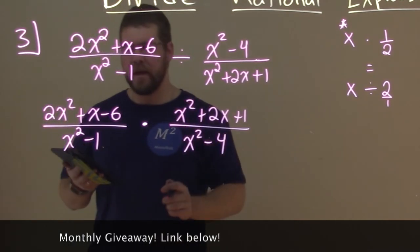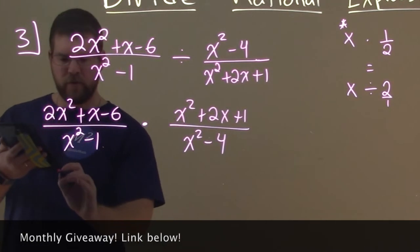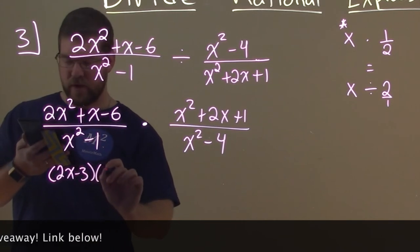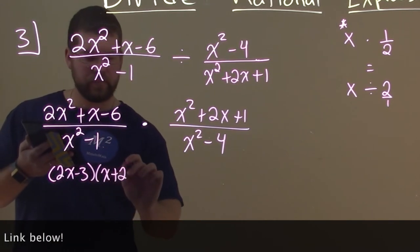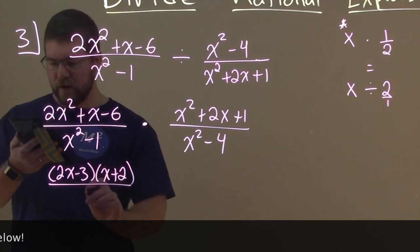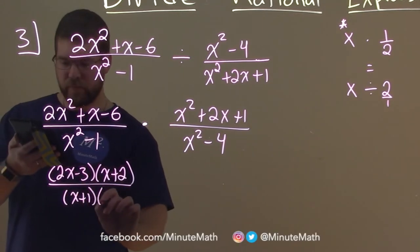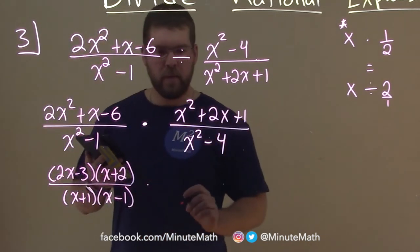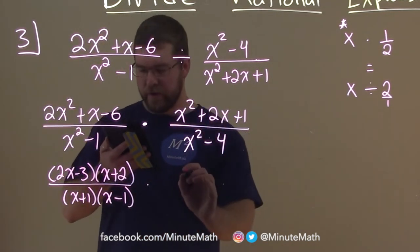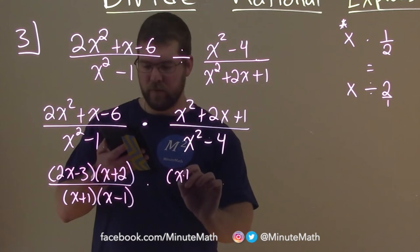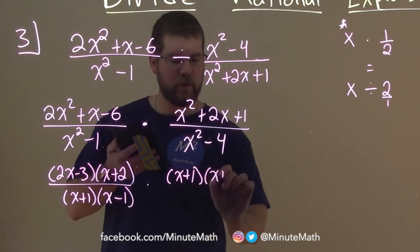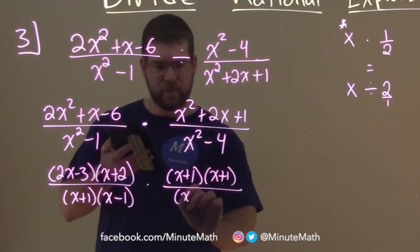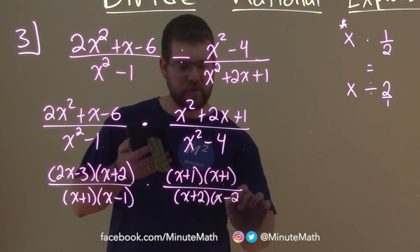So let's factor what we can. The numerator here ends up factoring to be 2x minus 3 times x plus 2. The denominator factors to be x plus 1 and x minus 1. For the second fraction, the numerator is x plus 1 times x plus 1, and the denominator is x plus 2 and x minus 2.